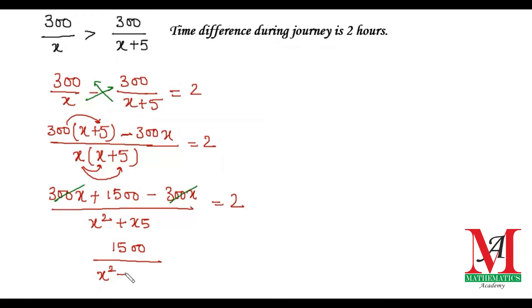Over x² + 5x equals 2. Now, doing the cross multiplication, we get 1500 = 2(x² + 5x). On simplification of the right-hand side, we get 2x² + 10x. Shifting 1500 from left to right, we get the equation 2x² + 10x - 1500 = 0.